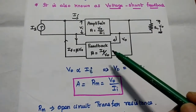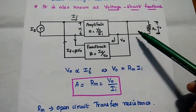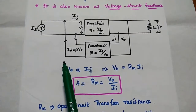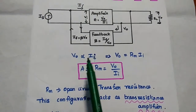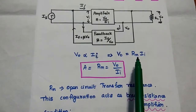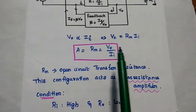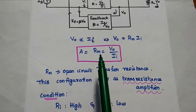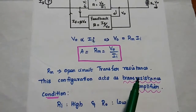We are going to use the feedback network with a gain beta. We can take a sample of the output voltage using the shunt sampling method and obtain the feedback signal as a current signal, connected in parallel with the input circuit. Here, output voltage is directly proportional to the input current. The proportionality constant is Rm because the gain equals output divided by input. The ratio of voltage to current is called transfer resistance, Rm, which equals the gain of the amplifier. This configuration acts as a trans-resistance amplifier.